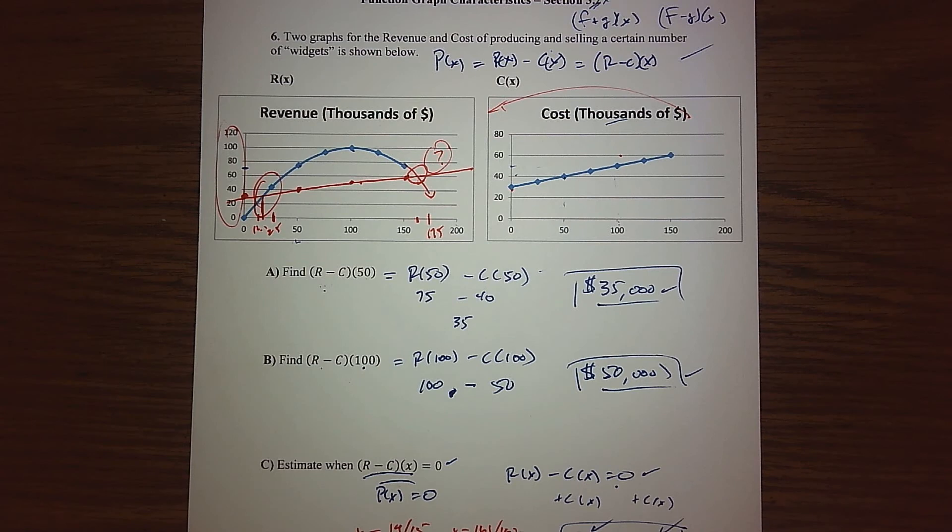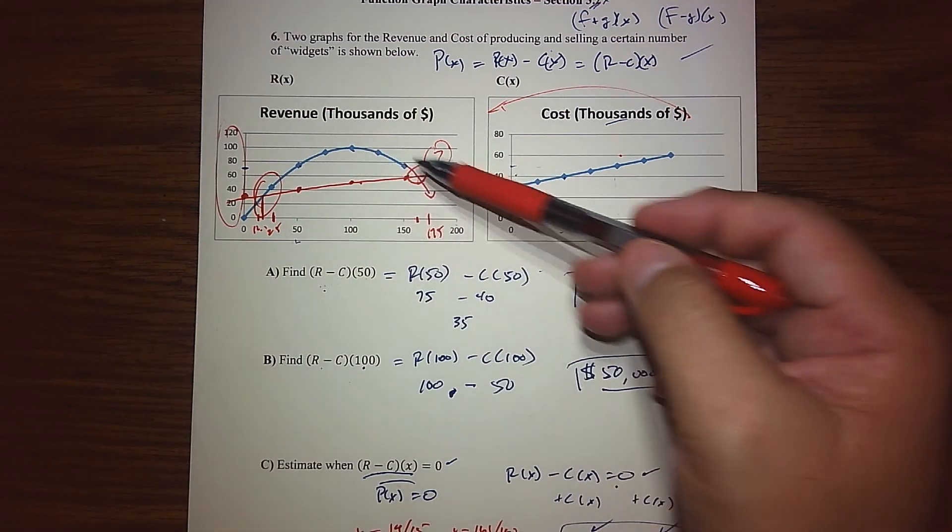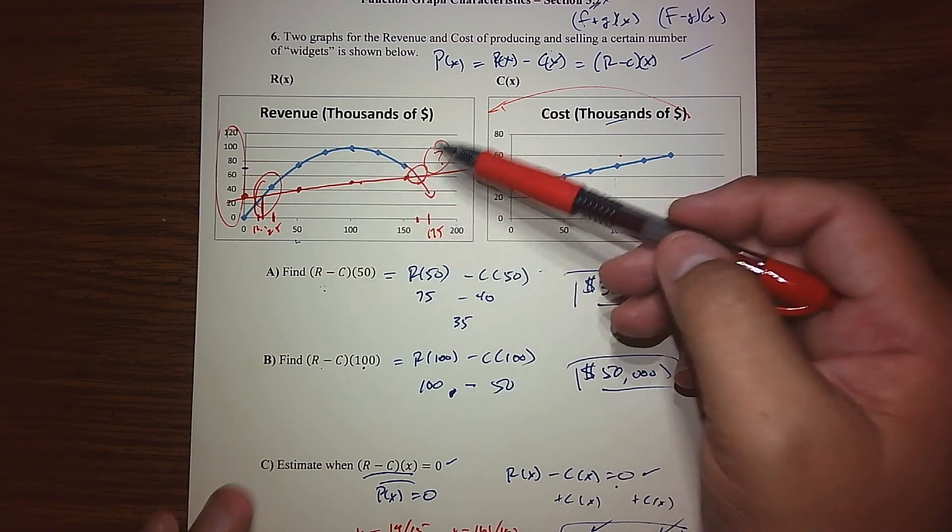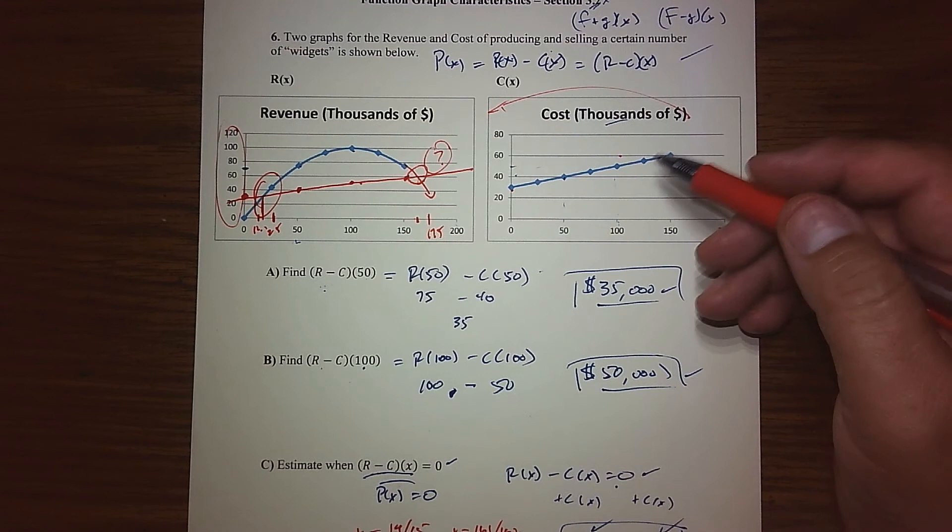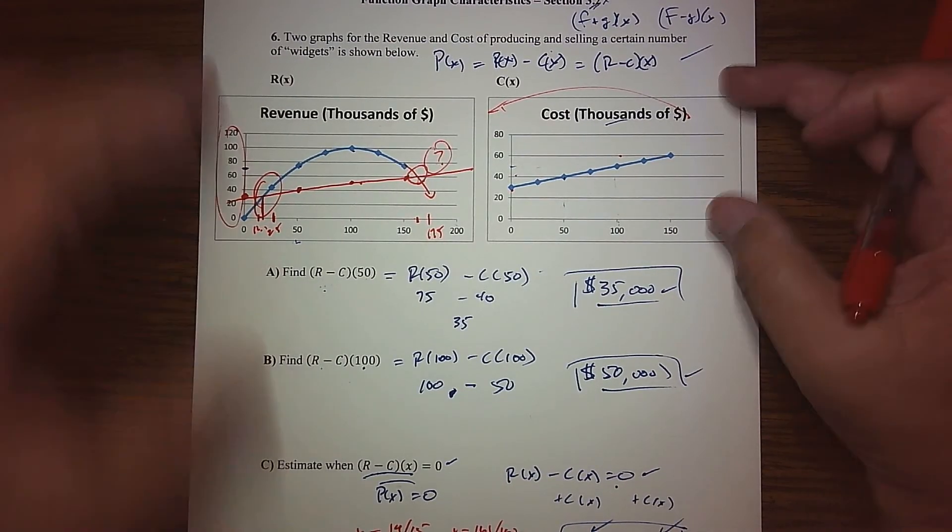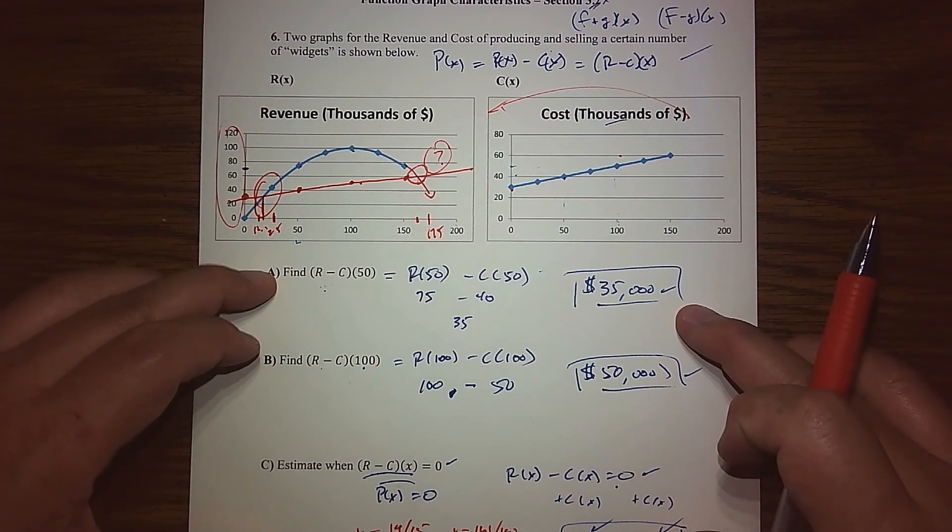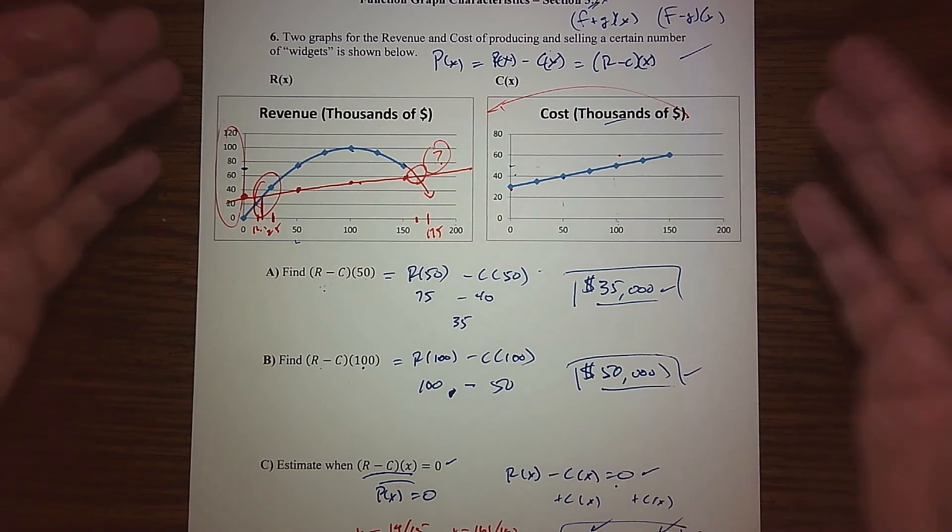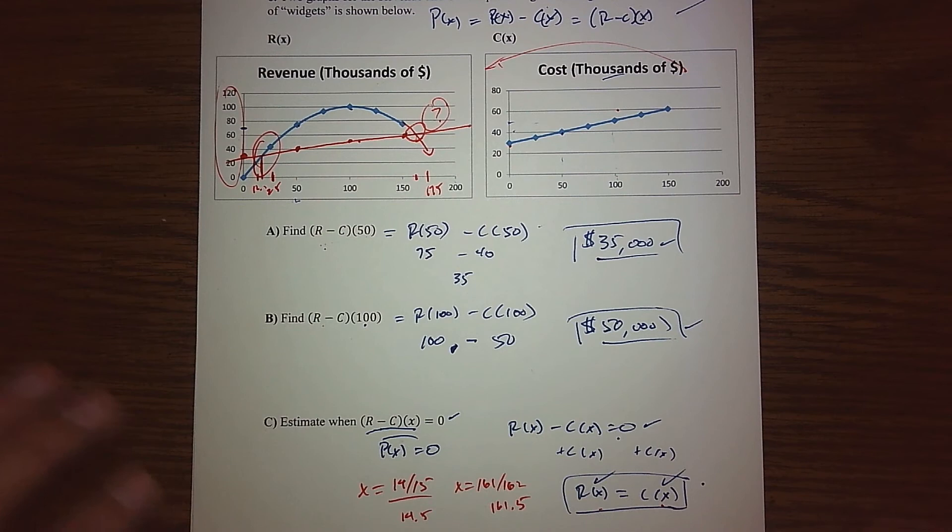If I wanted more accuracy, I'd probably generate a better graph, maybe put some grids in there, whatever the case might be. But for general purposes here, we're basically able to use a picture to answer questions about a function and its algebra. We built a new function, the profit function, and used those two graphs to find values.